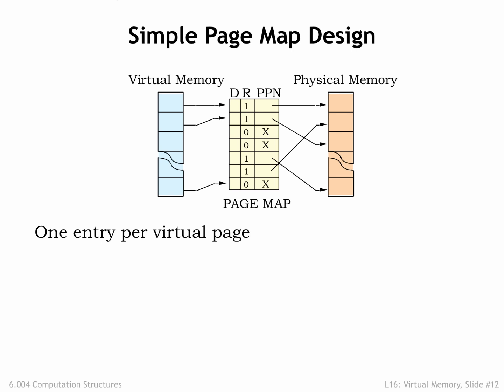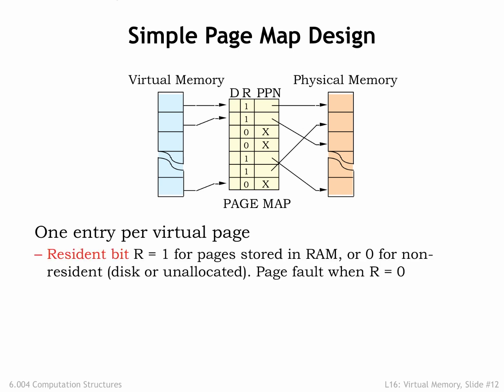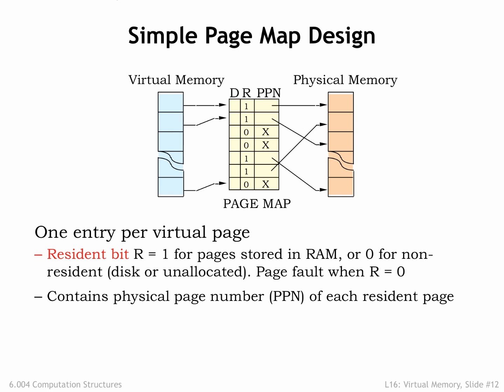The design of the page map is straightforward. There's one entry in the page map for each virtual page. For example, if the CPU generates a 32-bit virtual address and the page size is 2 to the 12th bytes, the virtual page number has 32 minus 12, or 20 bits, and the page table will have 2 to the 20th entries. Each entry in the page table contains a resident bit R, which is set to 1 when the virtual page is resident in physical memory. If R is 0, an access to that virtual page will cause a page fault. If R is 1, the entry also contains the physical page number, indicating where to find the virtual page in main memory.